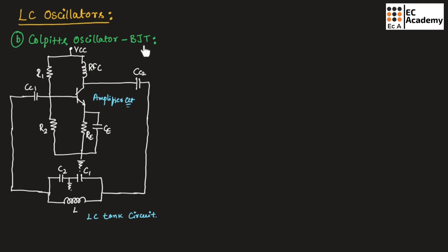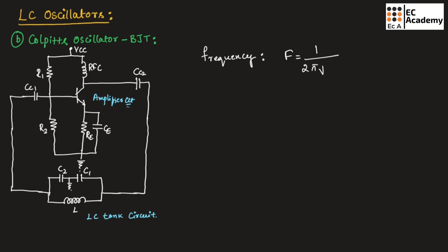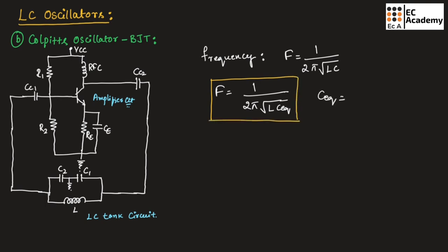Now let us understand the Colpitts oscillator using BJT. The Colpitts oscillator is similar to the Hartley oscillator. The only difference is in the LC tank circuit, which has two capacitors and one inductor. The working is the same. The frequency of oscillation is F = 1 / (2π√(L × C_eq)), where C_eq = (C1 × C2) / (C1 + C2).